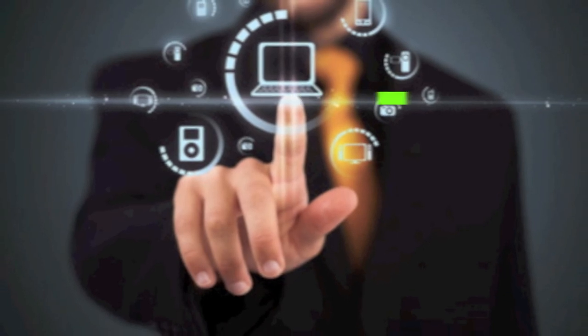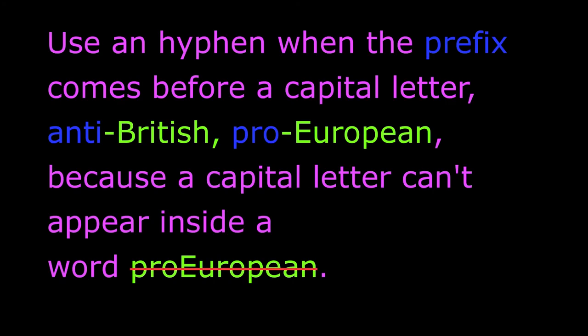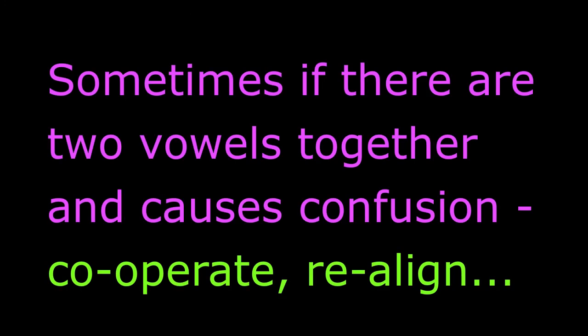British English uses more hyphens than American English. You must use a hyphen when the prefix comes before a capital letter — anti-British, pro-European — because a capital letter can't appear inside a word, though there are exceptions. Single letter prefixes: e-commerce, e-book, email. As we've seen, this changes with time — now we have 'email' and 'e-book'. Sometimes if there are two vowels together and it can cause confusion, like co-operate or realign, we stick in a hyphen.